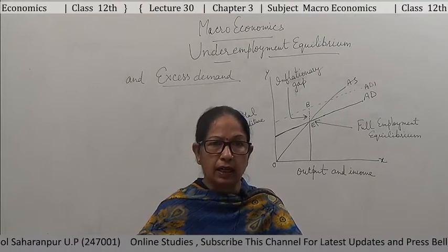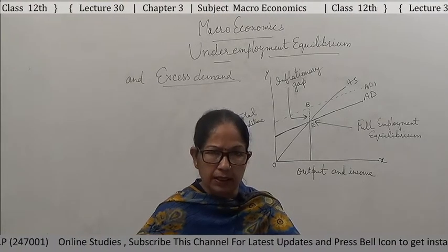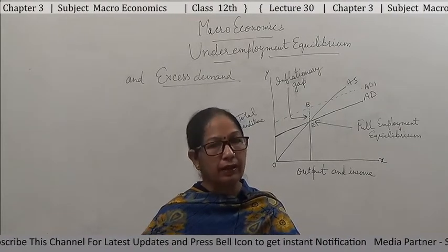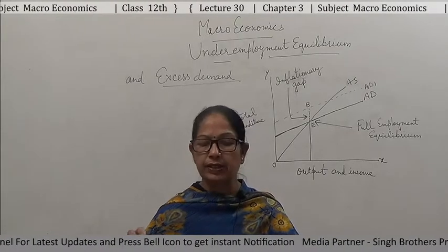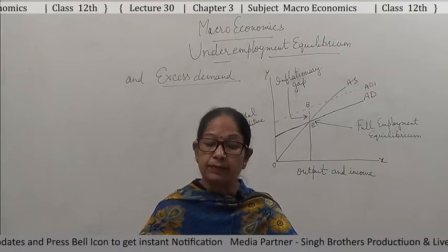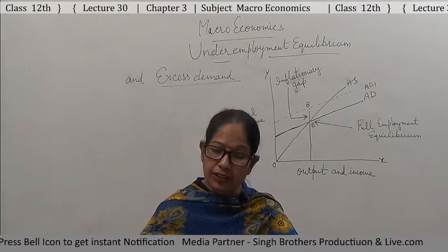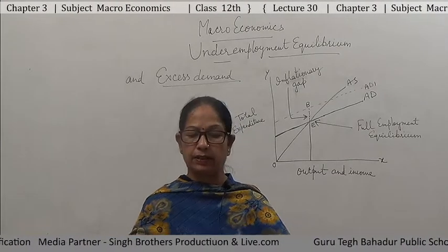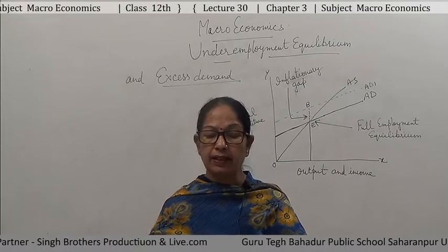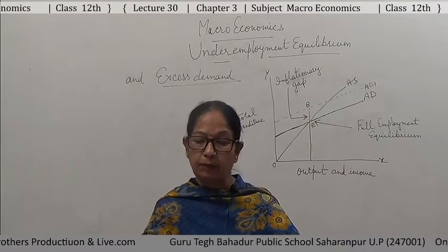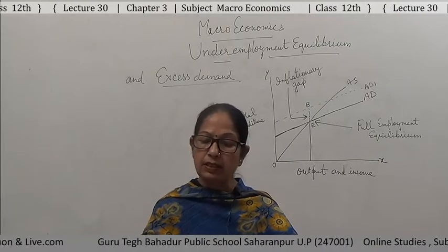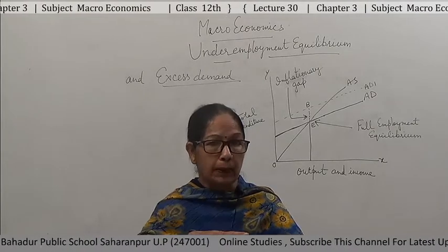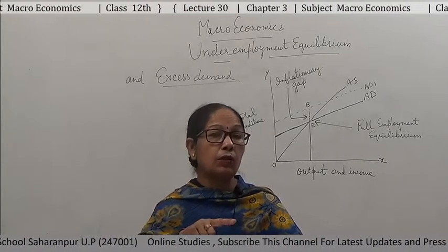These policies are tools in the hands of the government and RBI to control credit and to control excess demand or deficient demand, or inflation or deflation. Fiscal policy is the expenditure and revenue-taxation policy of the government to accomplish desired objectives. In case of excess demand, when current demand is more than AS at full employment, the objective of fiscal policy is to reduce aggregate demand. It is the government's policy related to its expenditure and revenue through taxation.